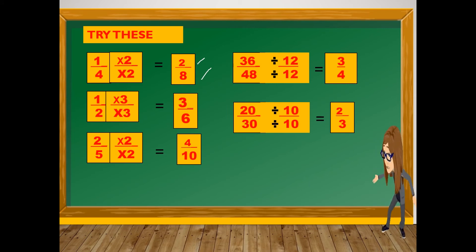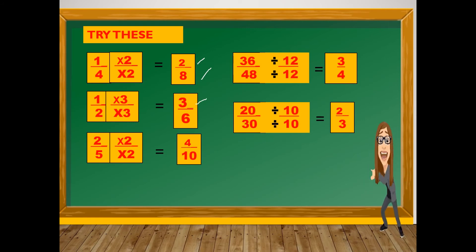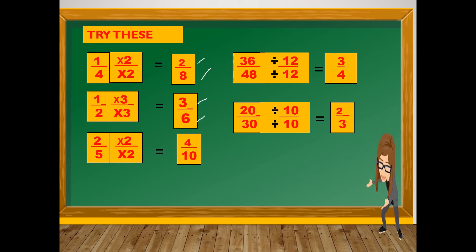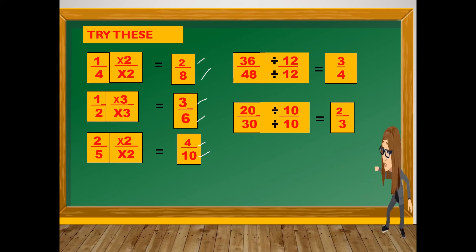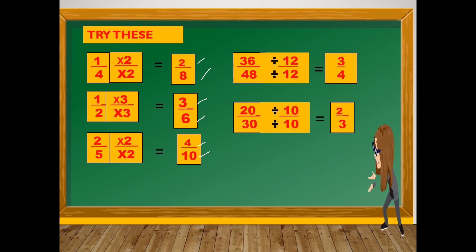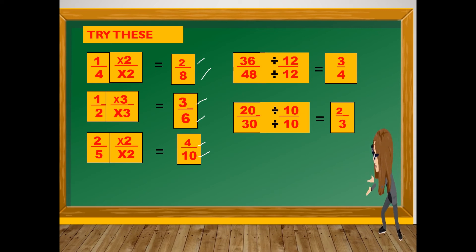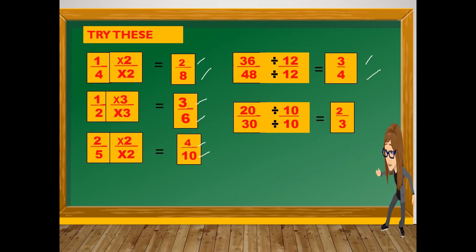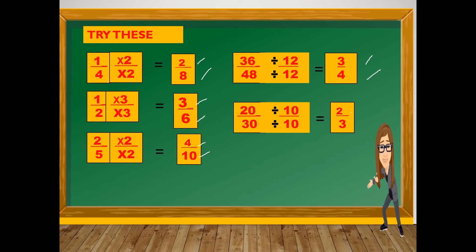Very good. One-half times three: one times three is three, and two times three is six. For two-fifths, multiply by two: two times two is four, and five times two is ten. For the bigger number 36 over 48, we need to divide by 12: 36 divided by 12 is 3, and 48 divided by 12 is 4. For 20 over 30, divide by 10: 20 divided by 10 is 2, and 30 divided by 10 is 3.